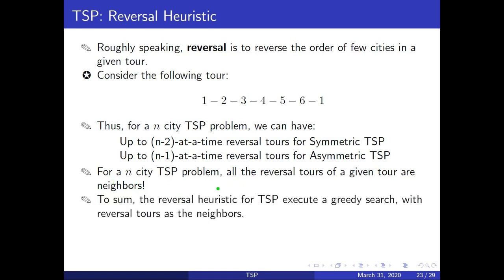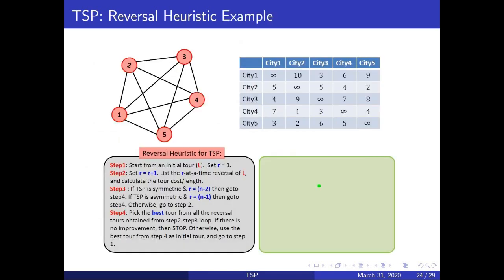We have seen the concept of greedy search in our heuristics chapter. Let us take an example and see how the reversal heuristic works. Here we have the same five-city TSP problem with the data, and here are the steps for the reversal heuristic. Let us start from some initial tour — let us say that's our initial tour: 1-2-3-4-5-1 — and the objective function value is 29.